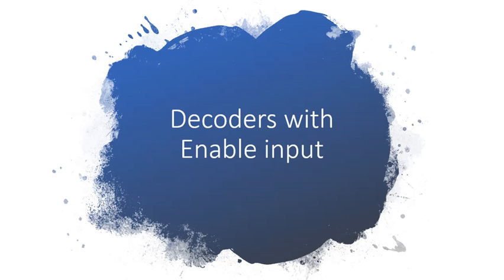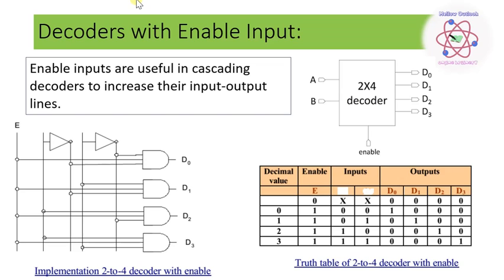Welcome to the tutorial on decoders with enable input. When we make use of decoders with enable inputs, the enable inputs are useful in cascading the decoders to increase their input and output lines. These are also used to obtain all the outputs to be at 0 or 1 respectively.